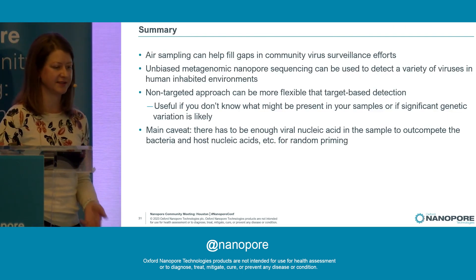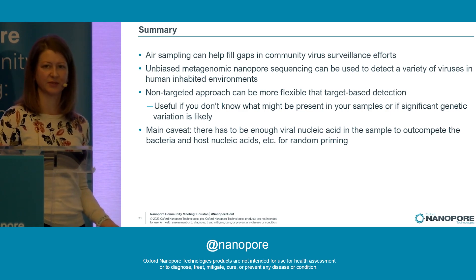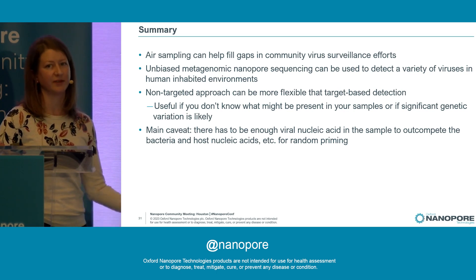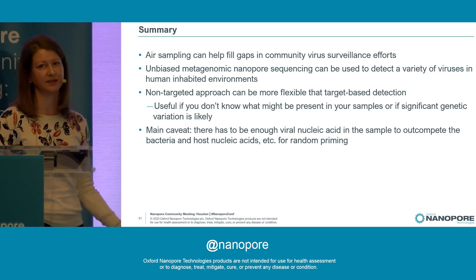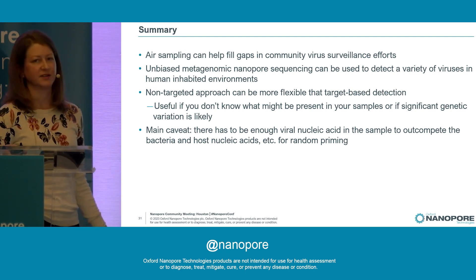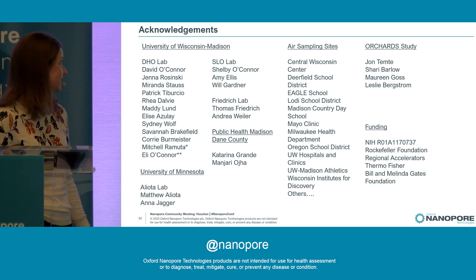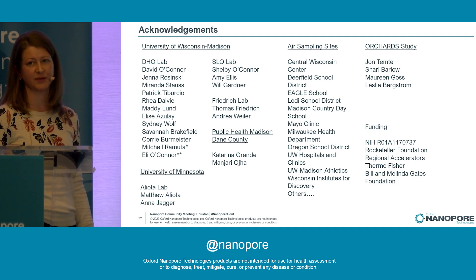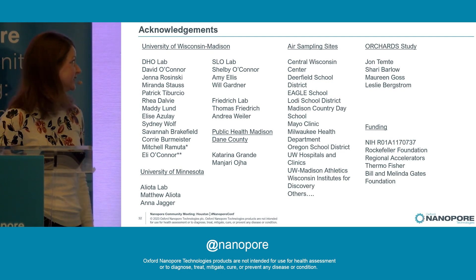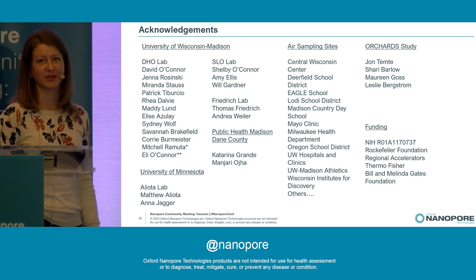To summarize: we feel that air sampling can help fill the gaps in community surveillance efforts. Using this unbiased approach is pretty flexible, although it comes with a big caveat — your viral nucleic acid is always competing with all of the other material you're picking up in these samples. These samples tend to be quite dirty, not clean like clinical samples from a sick individual — there's lots of bacteria and host material in them as well. I want to acknowledge everybody involved in this work, especially people in the DHO lab, the graduate students, and research specialists who have spent a lot of time teaching people how to run the air samplers. And also all of our sites that allowed us to place samplers, which can be kind of loud.